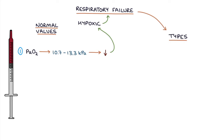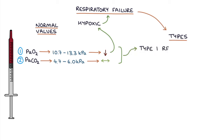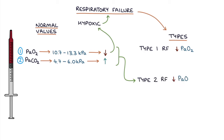A low PaO2 indicates hypoxia and respiratory failure. If the patient has a normal PaCO2 with a low PaO2, this indicates type 1 respiratory failure — only the PaO2 is affected. If the patient has a raised PaCO2 with a low PaO2, this indicates type 2 respiratory failure — both values are affected.